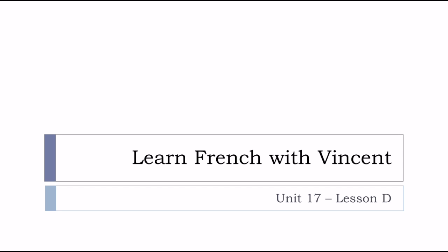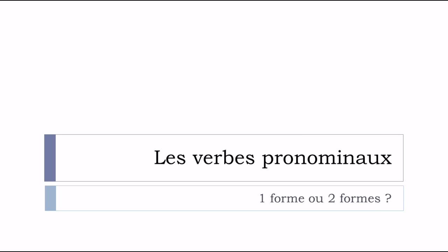Bonjour à tous and welcome to Learn French with Vincent. This is Unité 17, Leçon D. In this lesson we'll see together les verbes pronominaux, and we'll try to see whether it's possible to have one form or two forms — une forme ou deux formes.